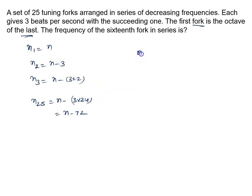Since it's decreasing, we have n = 2(n-72). So n = 2n - 144, which gives us n = 144 hertz.